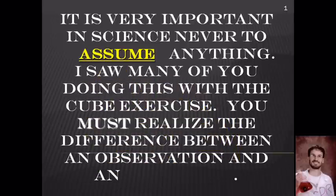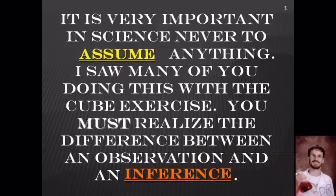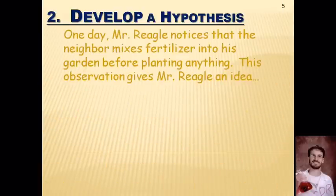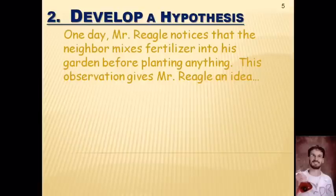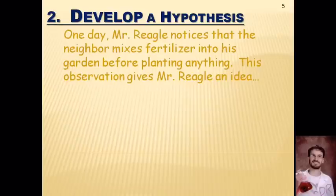In science, it's really important never to assume anything. Whenever you make an observation and it doesn't quite work out to be the reason you think — we talked about this in the last set of notes — that's what we call an inference. Important vocab term you're seeing twice. Develop hypothesis is step two. We've made our observations and asked our questions. Now, hypotheses are pretty much inferences — we've made observations and we're going to try to explain why we observed what we did.